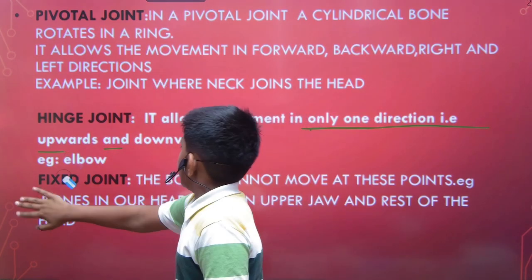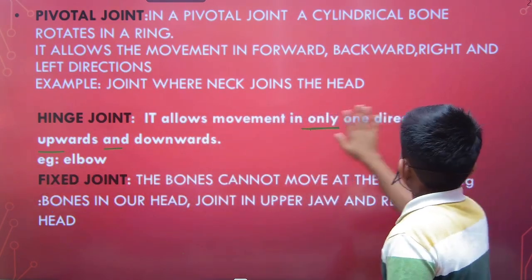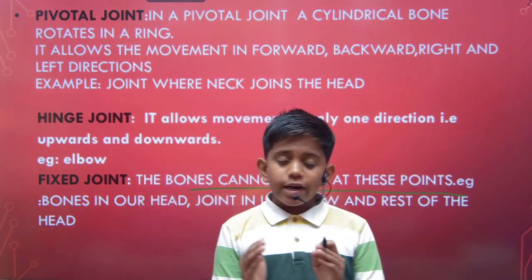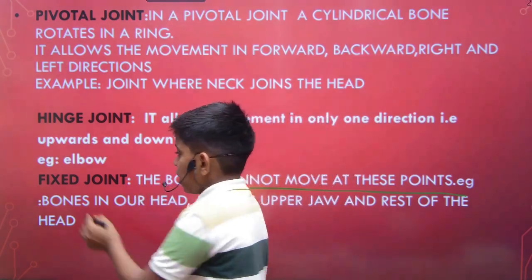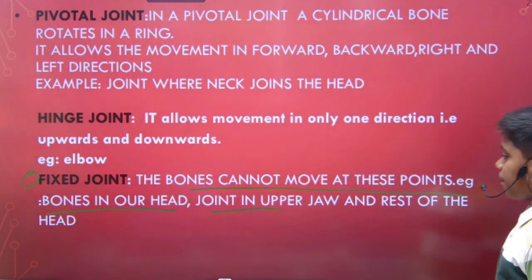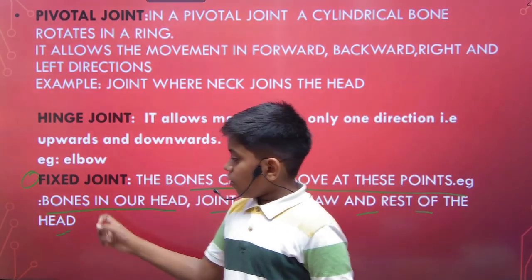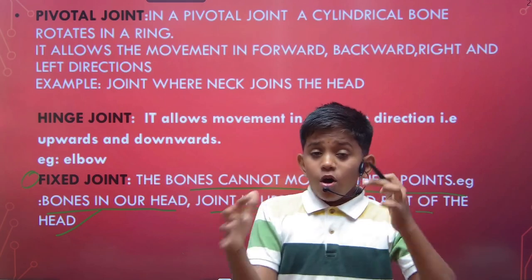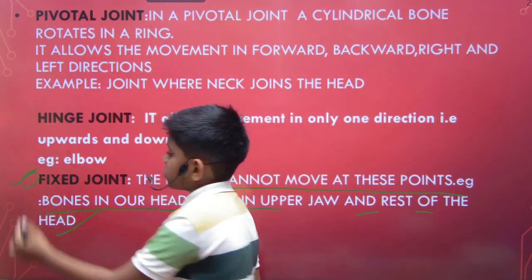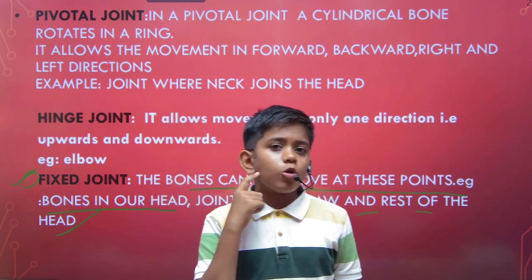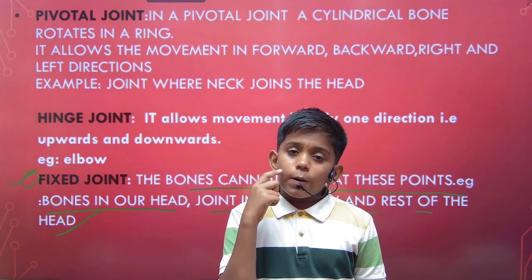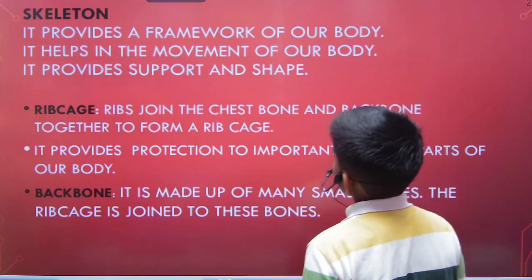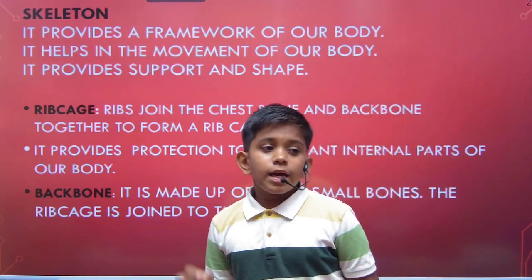Next we have the fixed joint. As the name suggests, the bones cannot move at these points. Bones in our head, the upper jaw, and the rest of the head are examples. Our skull is made of many parts joined together that do not move — that is the example of a fixed joint. Also, when we talk, only our lower jaw moves up and down; our upper jaw is fixed, making it another example of a fixed joint.